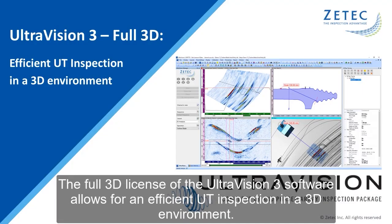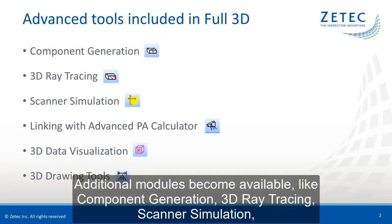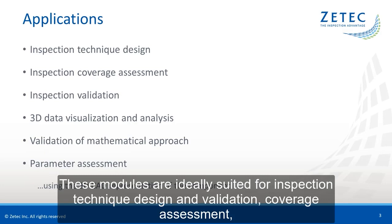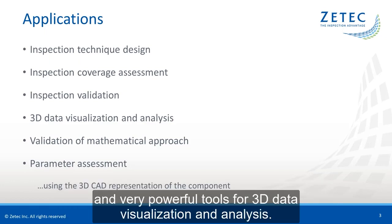The full 3D license of the UltraVision 3 software allows for an efficient UT inspection in the 3D environment. Additional modules become available like component generation, 3D ray tracing, scanner simulation, linking with the advanced calculator, 3D data visualization, and the 3D drawing tools. These modules are ideally suited for inspection technique design and validation, coverage assessment, and are very powerful tools for 3D data visualization and analysis.